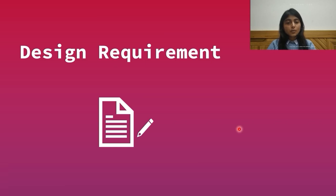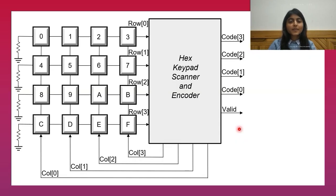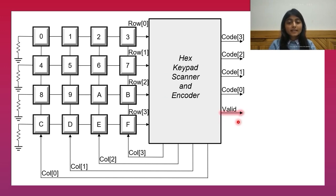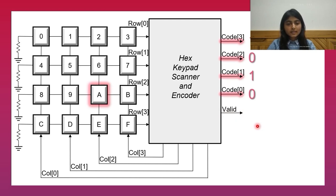The first and foremost step in any design flow is understanding the design requirements. The keypad scanner and encoder is supposed to identify whether a valid key out of the given 16 inputs has been pressed. Then it has to identify which of the given 16 inputs is pressed and generate a unique code corresponding to the pressed key.